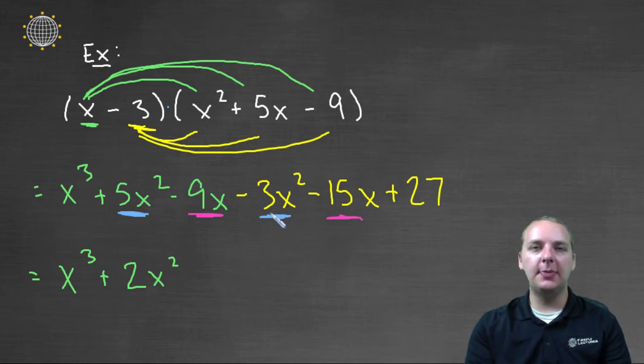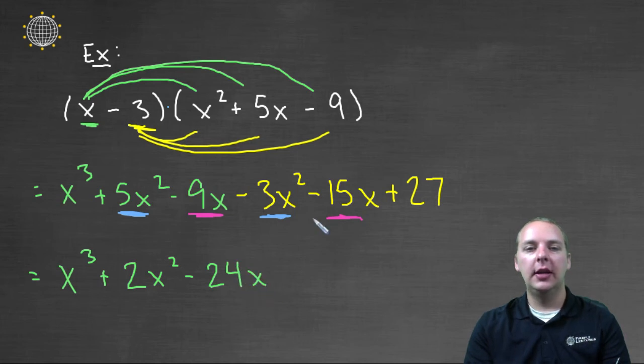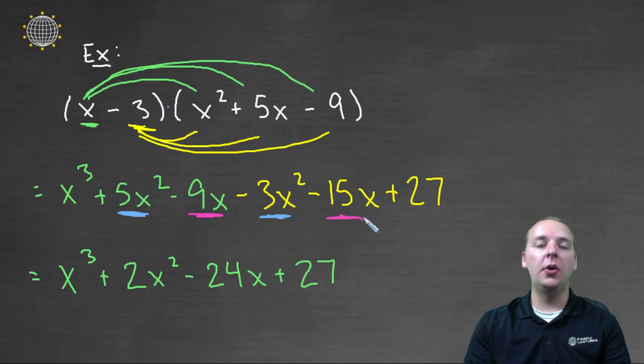Minus nine x minus fifteen x would make minus twenty-four x. And then we still have a plus twenty-seven and there are no other constants. So we'll just leave that plus twenty-seven.